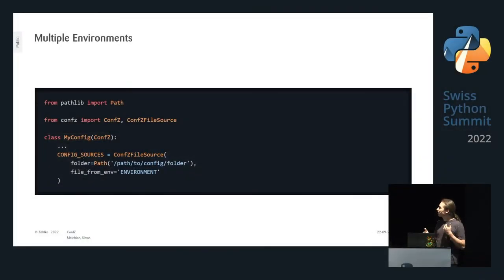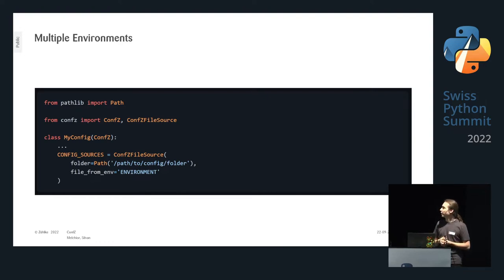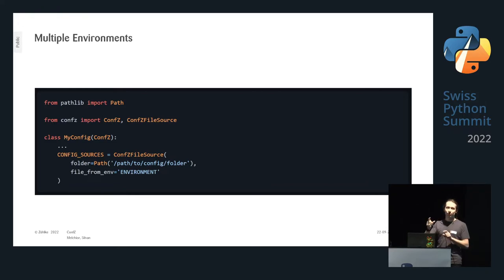For multiple environments — local dev, staging, production — you might have different config files. That's no problem in conf-set. Instead of defining a file you just define a folder, then tell conf-set where to get the environment name. In this example it reads the environment variable 'environment', looks at its value, and reads the config file in the folder with that name. That's all you need to go from a single-environment setup to a multi-environment setup.